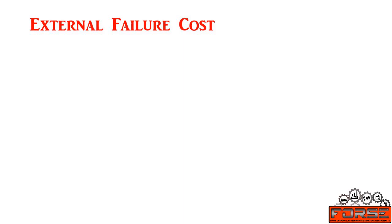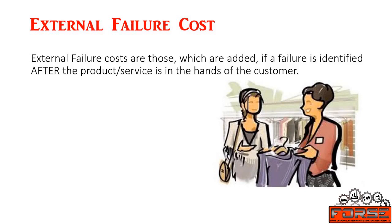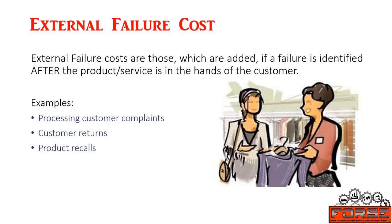External failure costs are those which are incurred if a failure is identified after the product or service is in the hands of the customer. In the apparel industry, failure costs that arise after a garment unit supplies the product to the customer — such as cost of returned merchandise, cost of quality claims, cost of transportation for the defective merchandise, and personnel costs associated with these activities — add up to external failure costs. These costs can be much higher than internal failure costs because the stakes are much higher. Examples of external failures are processing customer complaints, customer returns, product recalls, and many more.